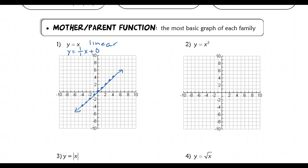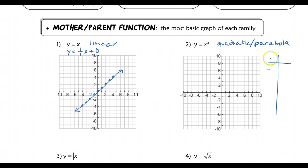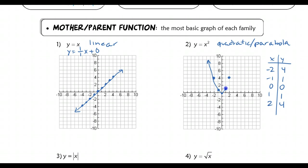The next graph, number 2, is a quadratic, and it's going to take the shape of a parabola. We want to draw a table with x values from negative 2 to 2. Squaring negative 2 gives 4, squaring negative 1 gives 1, squaring 0 gives 0, and then you see some points repeated: negative 2, 4; negative 1, 1; 0, 0; 1, 1; and 2, 4. There is the mother function for a quadratic or parabola.